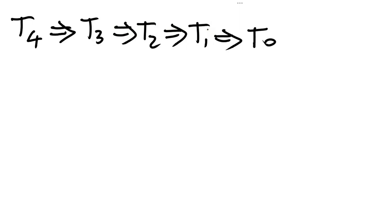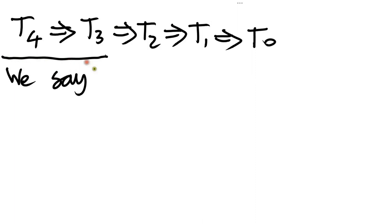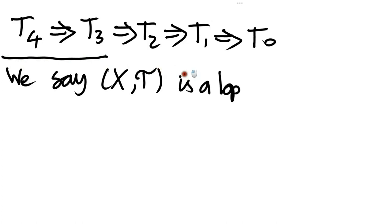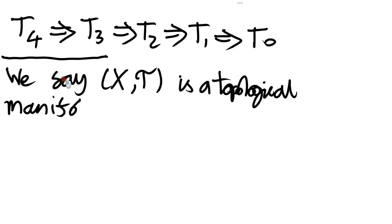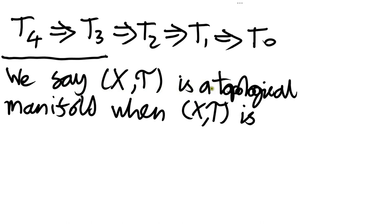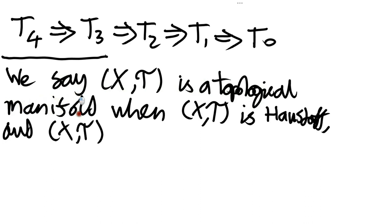One final thing to mention while we're doing this topic: I may as well give you the definition of a topological manifold. We say that X-tau is a topological manifold when two conditions hold: firstly, we need this topological space to be Hausdorff, and secondly, we need the space to be locally Euclidean.